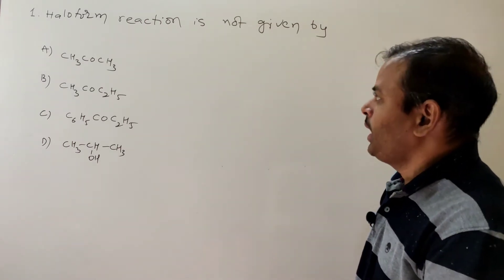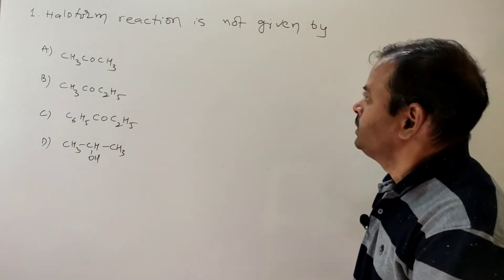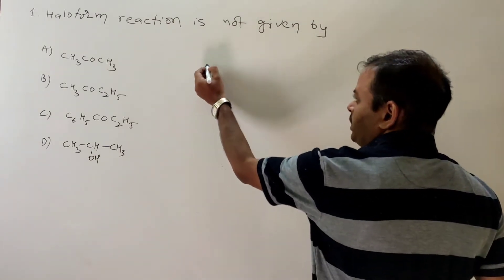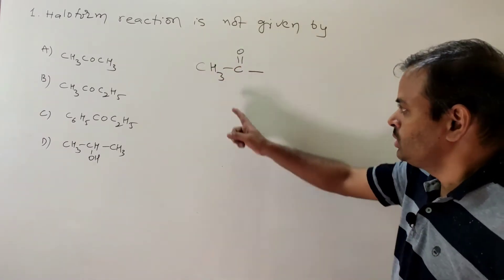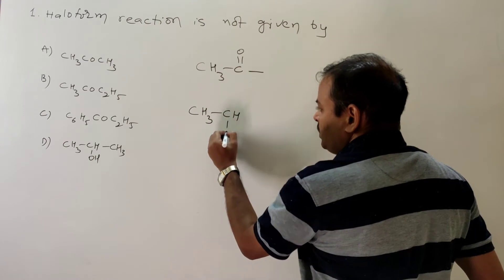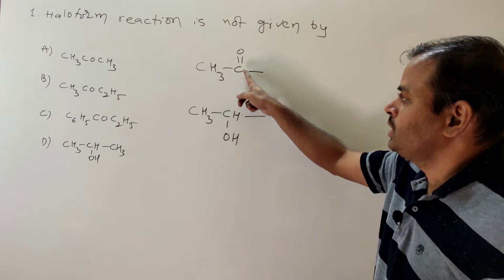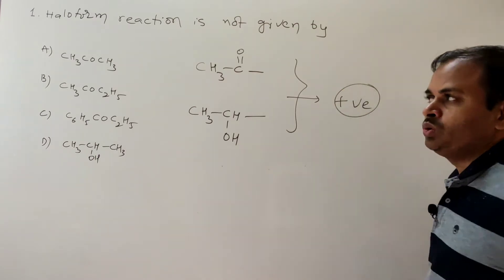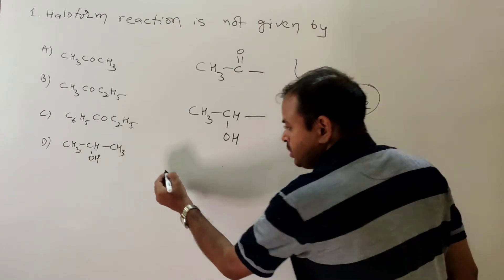First question: haloform reaction is not given by which of the following? We know that haloform reaction requires CH3CO-containing compounds. If they are carbonyl compounds, they must have the CH3CO group; if they are alcohols, they must have the CH3CHOH group. Only these compounds give a positive test for haloform reaction.